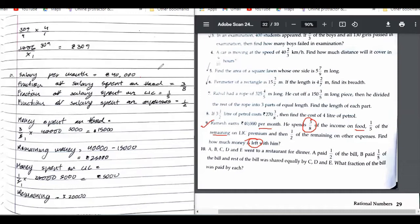Salary per month 40,000. Fraction of salary spent on this. These two statements are incorrect. Fraction of salary which is not 1/5. Fraction of salary remaining, of remaining.